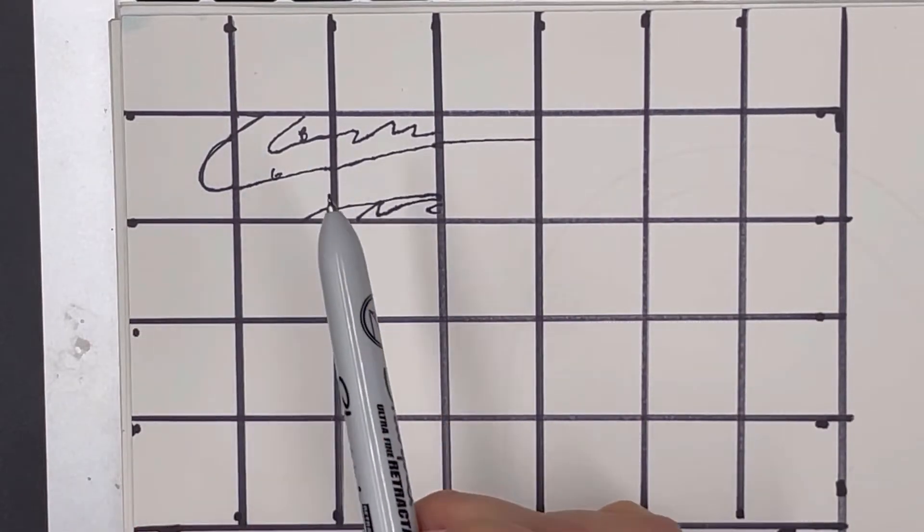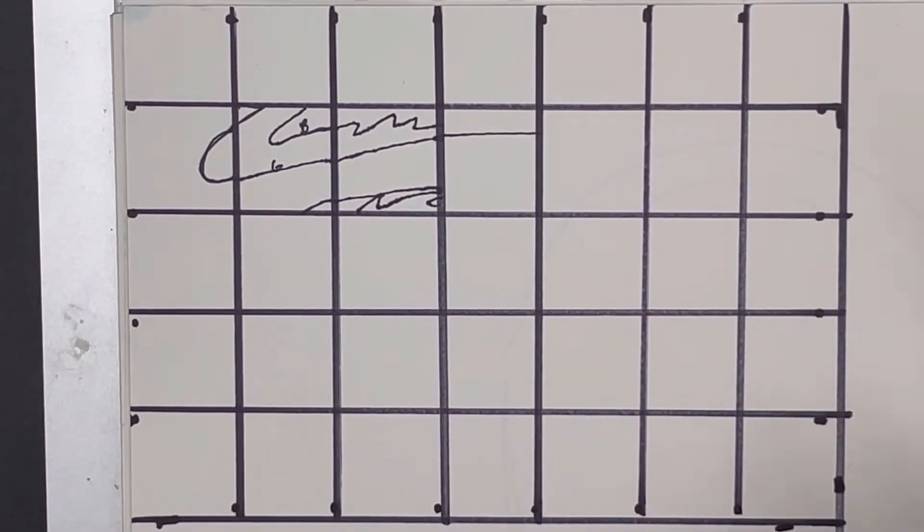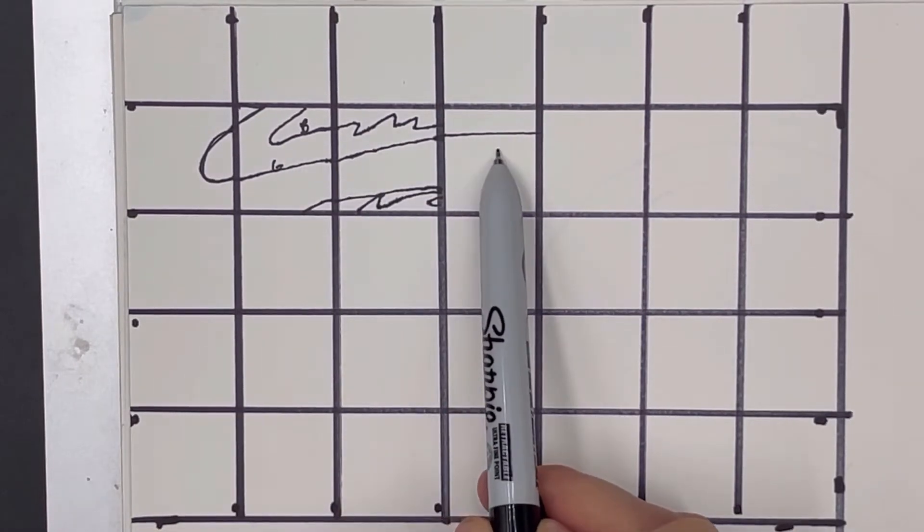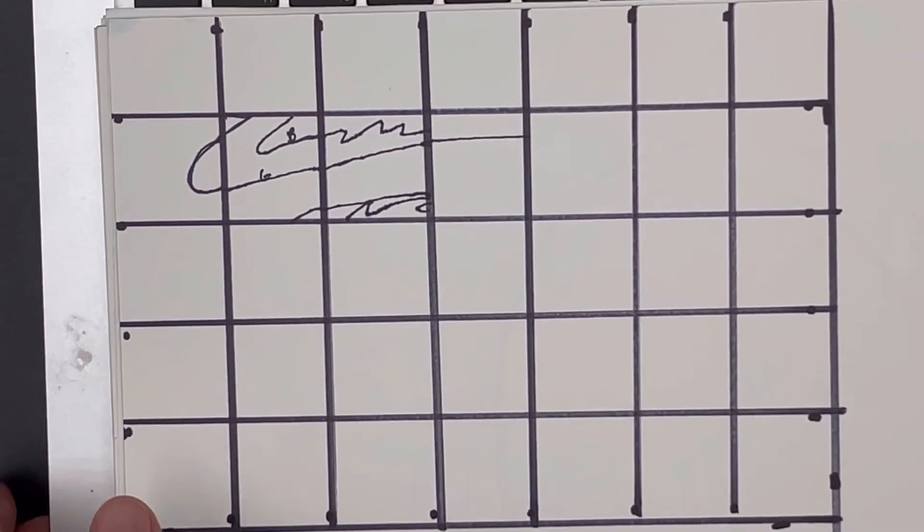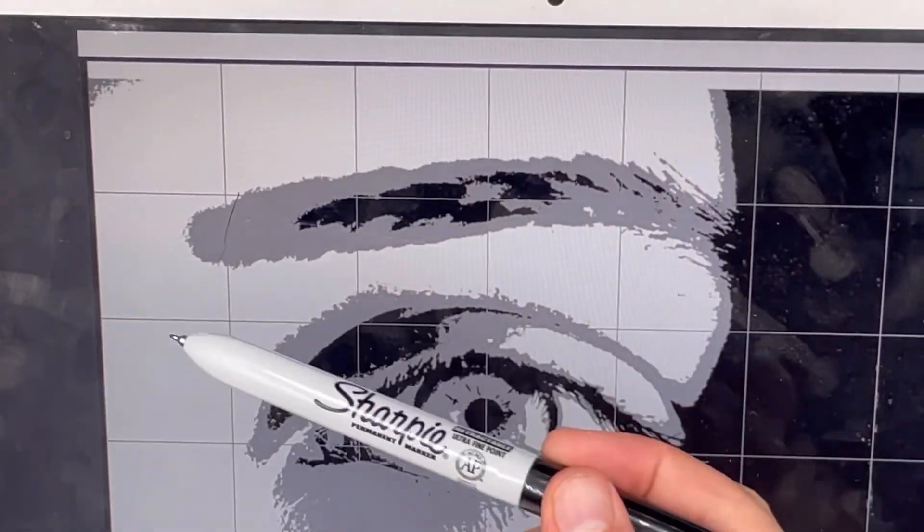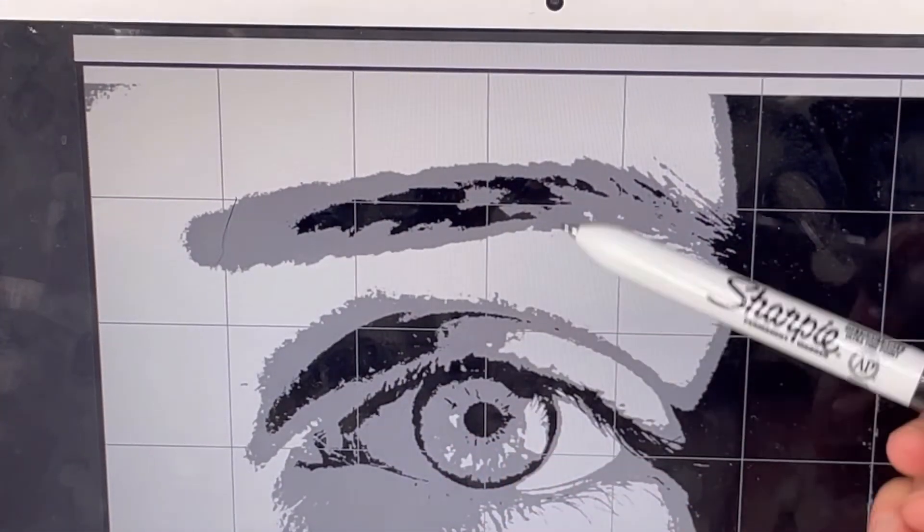So I'm just taking my time continuing to work through this box by box, getting everything filled in. Now I'm just moving over again. Every once in a while, just double check that you're in the correct box. So I'm working in the fourth box over and the second one down. So I'm going to make sure that I'm in my correct box here. So one, two, three, fourth one over, second one down.